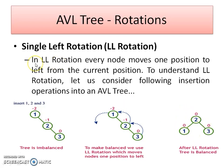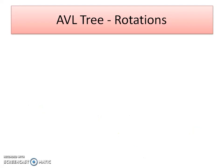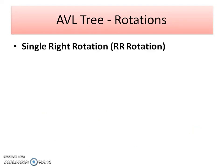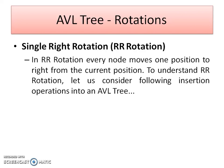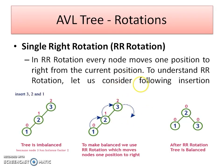Now let's go forward for the next single rotation, which is the right rotation — that is RR rotation. I am going to insert data in descending order. Again it is forming a skewed binary tree, which is not satisfying the balance factor property. The tree is imbalanced, and to make it balanced we need to perform a single right rotation. That is why this rotation is called RR rotation.